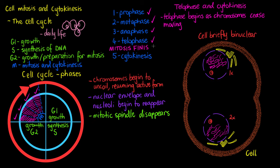You might be wondering: if mitosis has finished, why don't we just include cytokinesis in one of the four previous steps? That's because cytokinesis isn't really occurring in just one of those phases. It starts around anaphase — the third step in mitosis — and continues all the way through anaphase, telophase, and past the end of telophase. So we split it into its own group.